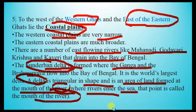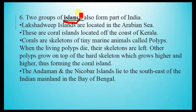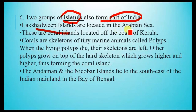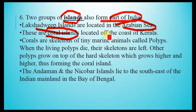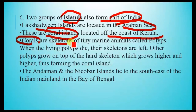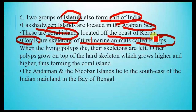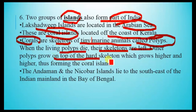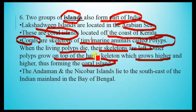Two groups of islands also form part of India. The Lakshadweep Islands are located in the Arabian Sea and are coral islands, located off the coast of Kerala. Corals are skeletons of tiny marine animals called polyps. When the living polyps die, their skeletons remain, and other polyps grow on top, building higher and higher, thus forming coral islands.